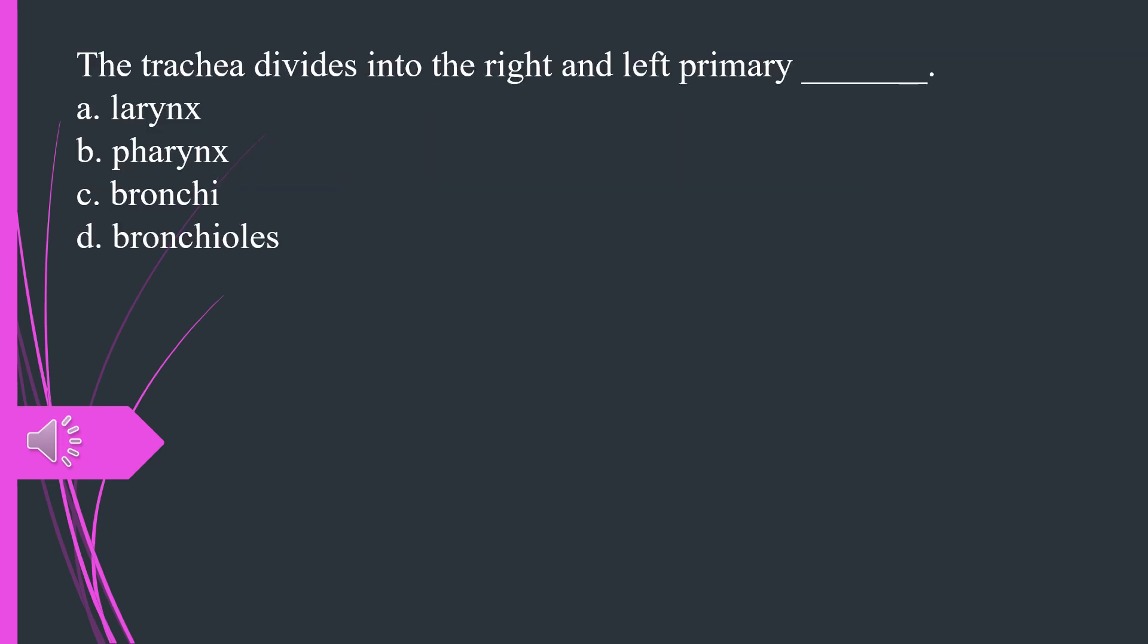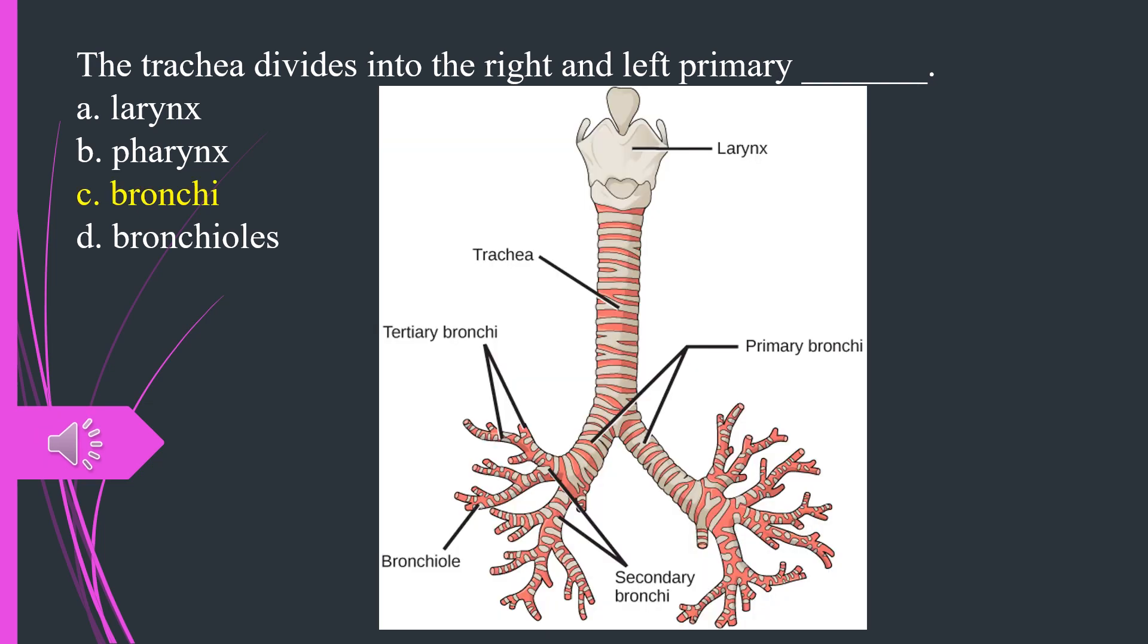The trachea divides into the right and left primary A. Larynx B. Pharynx C. Bronchi D. Bronchioles. The answer is C, bronchi.